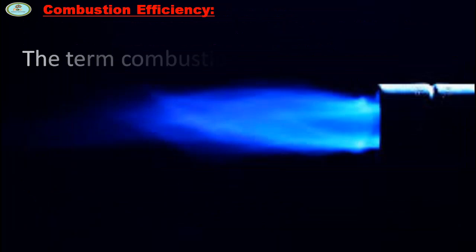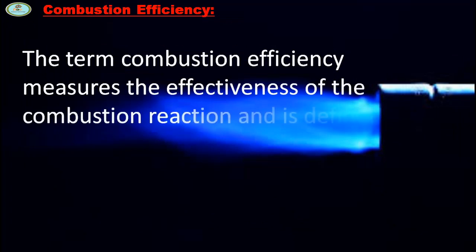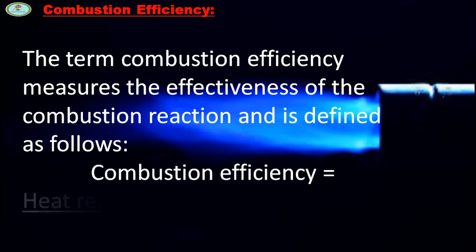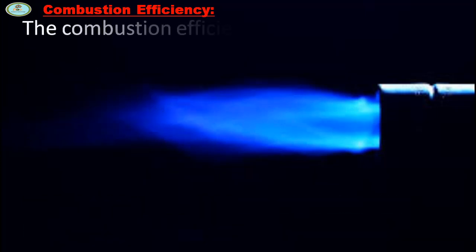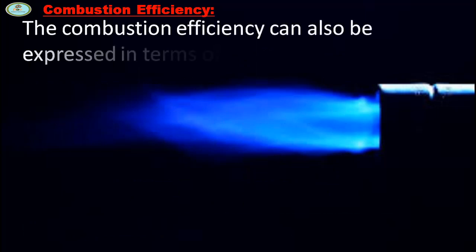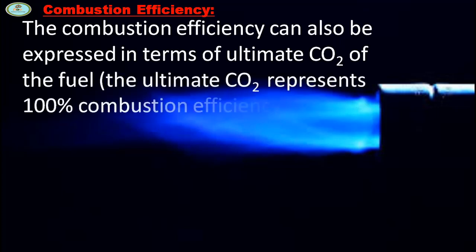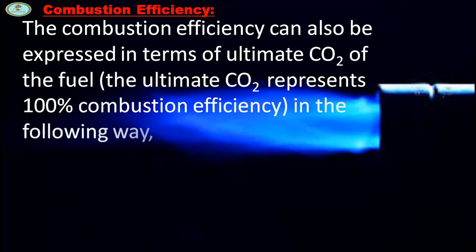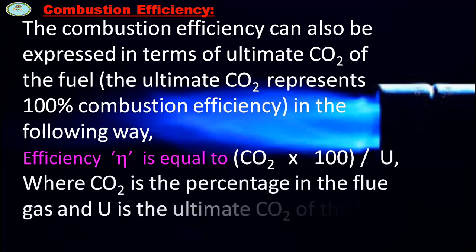The term combustion efficiency measures the effectiveness of the combustion reaction and is defined as follows: combustion efficiency is equal to heat released during the combustion divided by heat contained in the fuel. The combustion efficiency can also be expressed in terms of ultimate CO2 of the fuel. The ultimate CO2 represents 100% combustion efficiency in the following way: efficiency η is equal to CO2 × 100 divided by U, where CO2 is the percentage in the flue gas and U is the ultimate CO2 of the fuel.